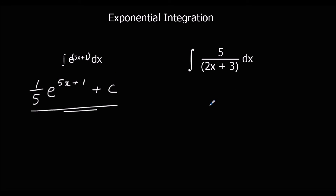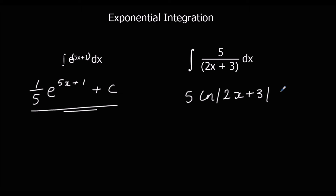Same thing over here. Whenever we've got 1 over x, or something like 1 over x, it's going to go to ln. So we'll have 5 ln of 2x plus 3, and we're going to divide by the bracket differentiated, which is 2 in this case. That gives us 5 over 2 ln of 2x plus 3, plus c.